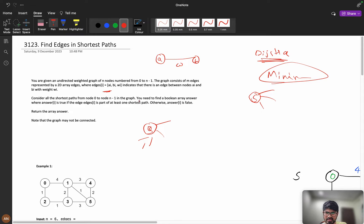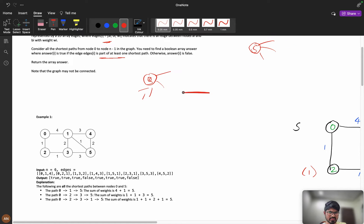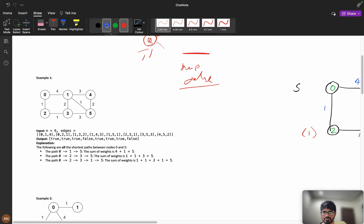You need to find a Boolean array answer where answer of i is true if the edge is part of at least one shortest path. He is saying that if my edge is part of one of the shortest paths, you need to make it true, or else you need to make it false. Now let us see with example. We have this and you know what the shortest path is. This can be my shortest path or I can go like this. Let us change the color for better understanding: 1, 1, 2, and 1. This can be my shortest path or I can go directly like this.